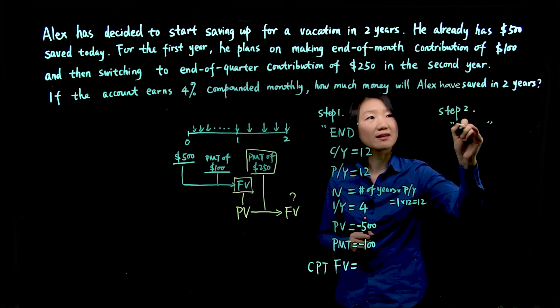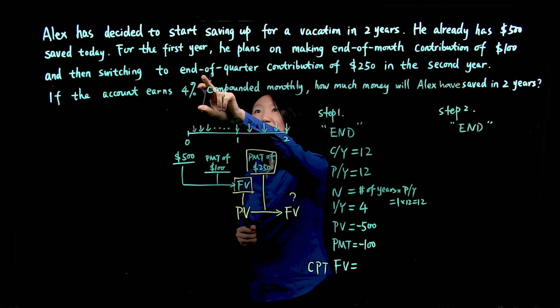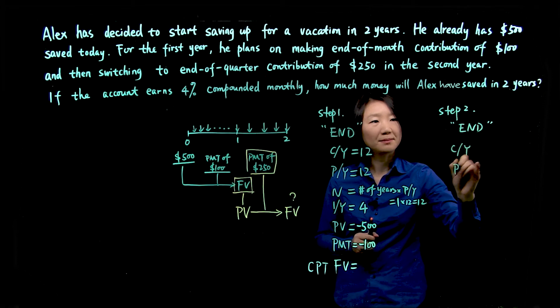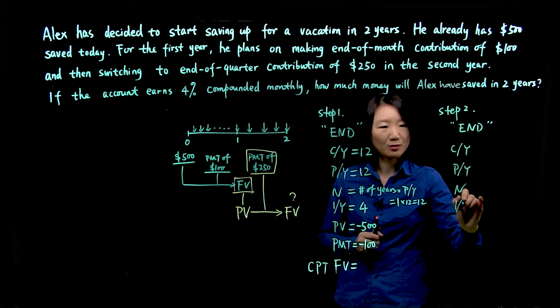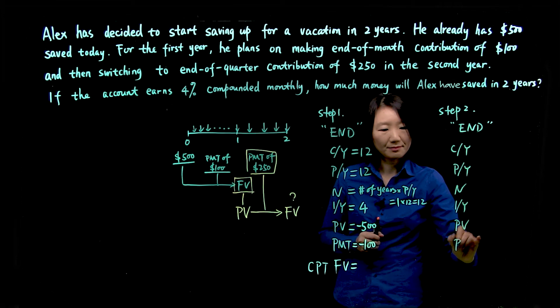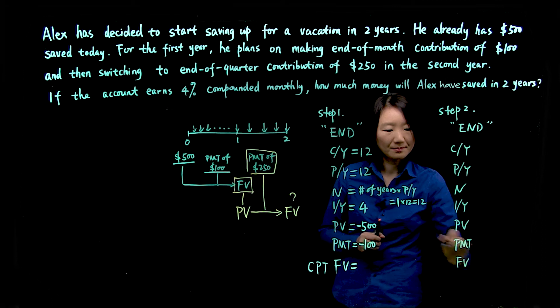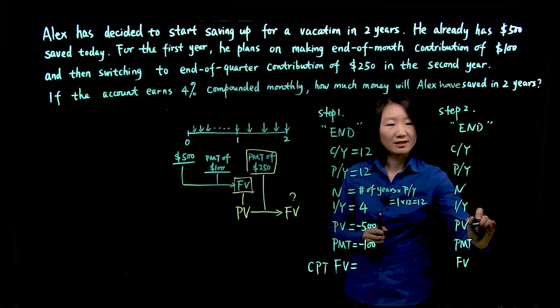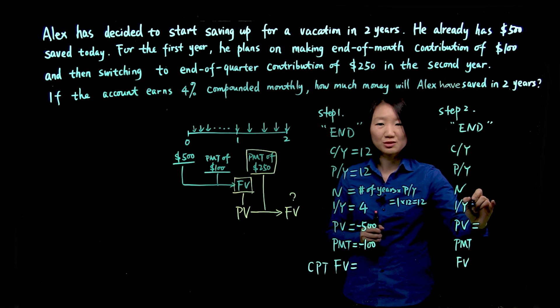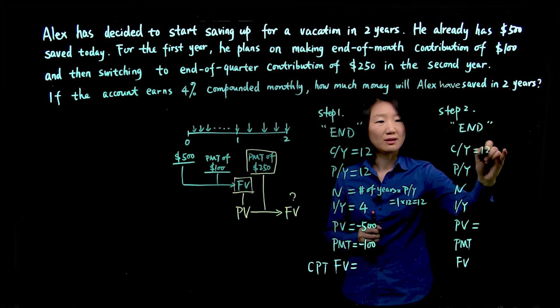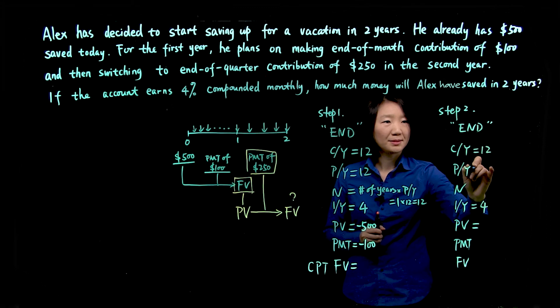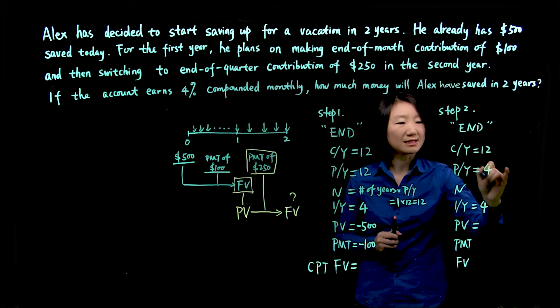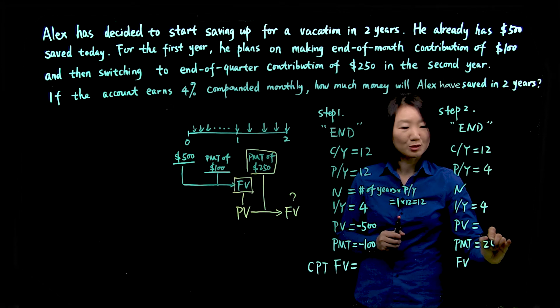Again, we will be working with an end mode, because the payment is end of quarter. CY, PY, N, IY, PV, PMT, and the future value. So remember this future value will become our new present value, so we will have that answer. Interest rate is 4, compounding is still 12. Periodic payment is end of quarter payment, so it's 4 times each year. And payment amount is $250.